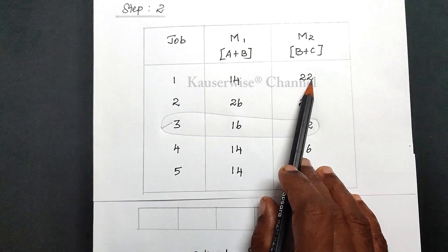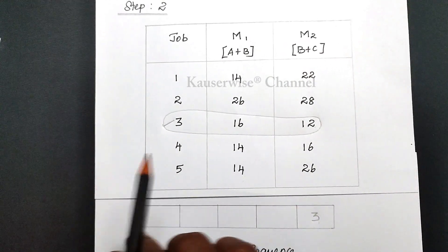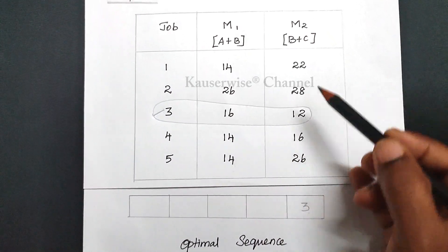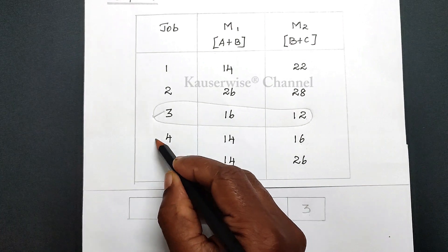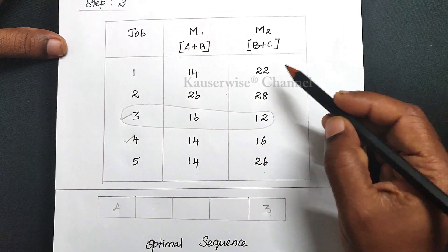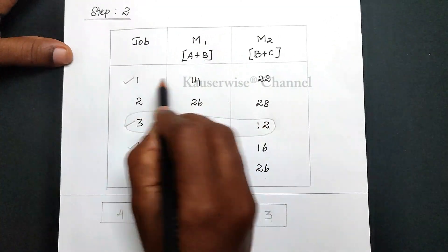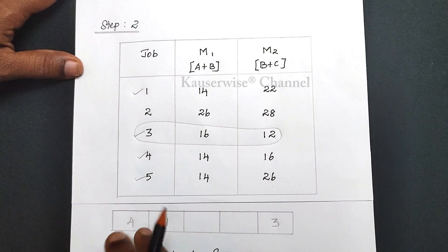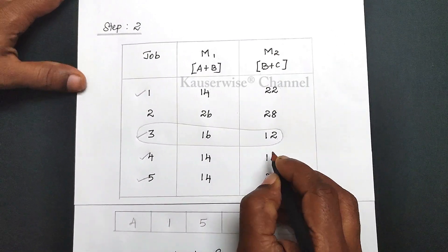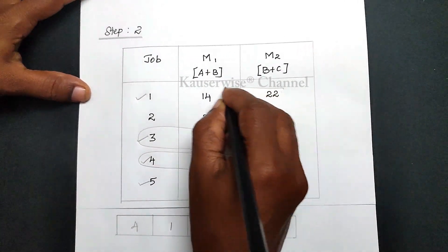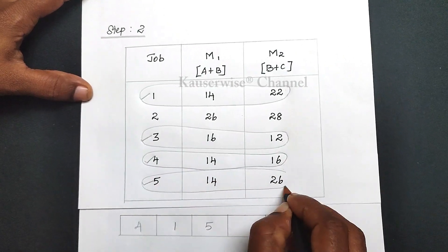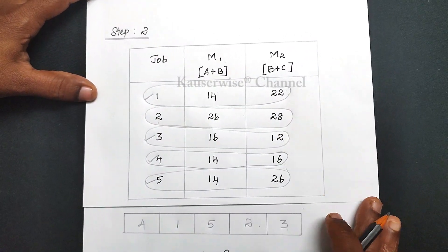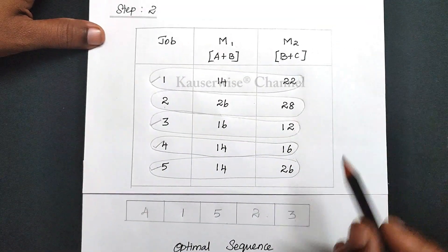In case of a tie, we check the opposite minimum value and assign jobs in the forward direction. The opposite values are 22, 16, and 26. The minimum is 16, so assign that job forward first. Next minimum is 22, assign that job forward next. Then 26, assign that job forward next. We have assigned 3 jobs in the forward direction. Only job 2 remains, so assign it in the remaining position. The optimal job sequence is found using Johnson's algorithm.